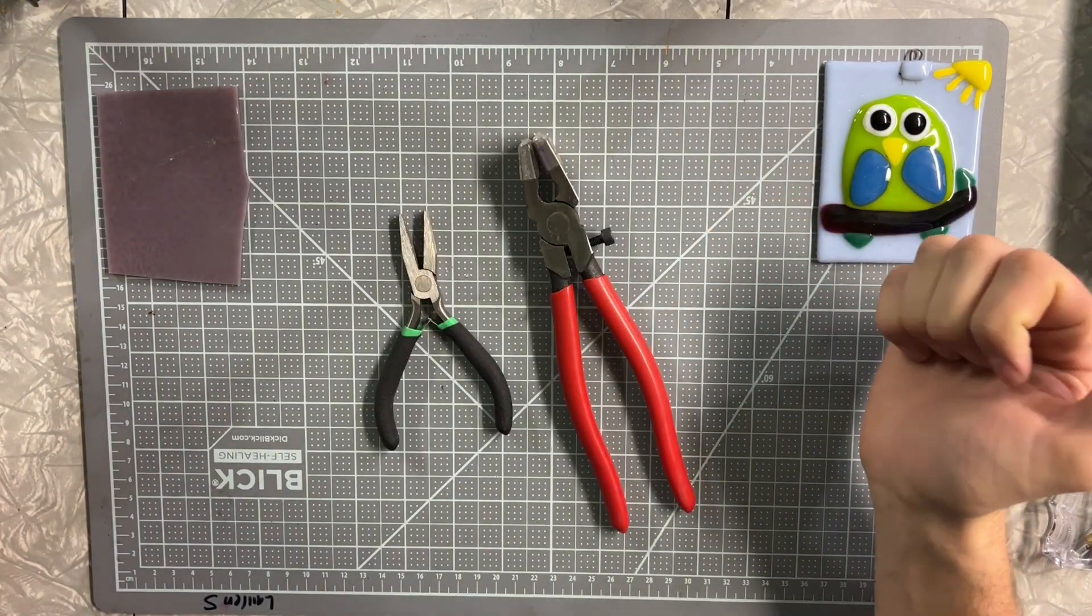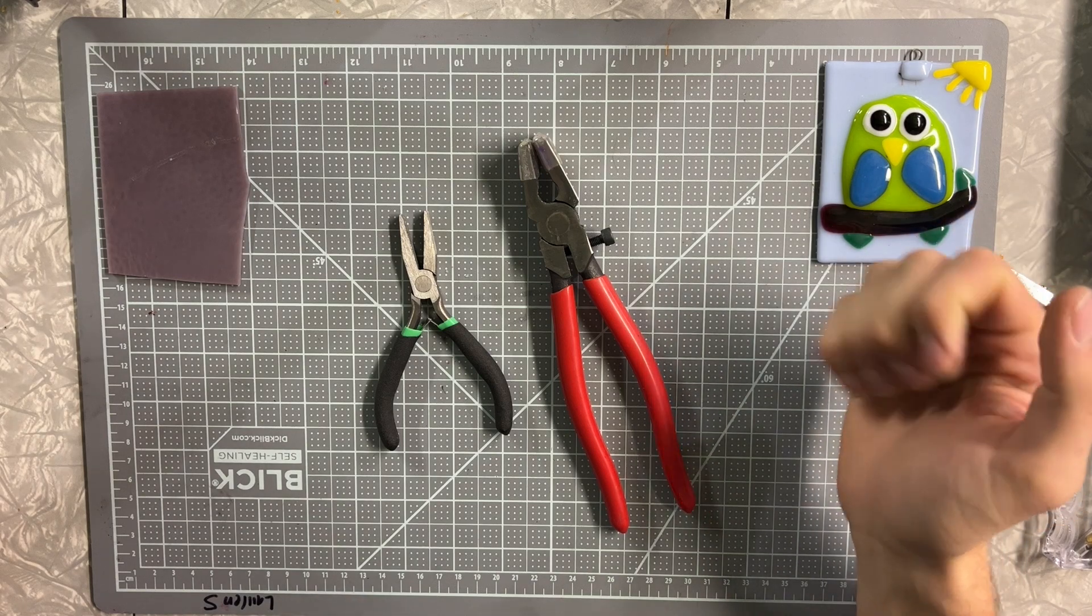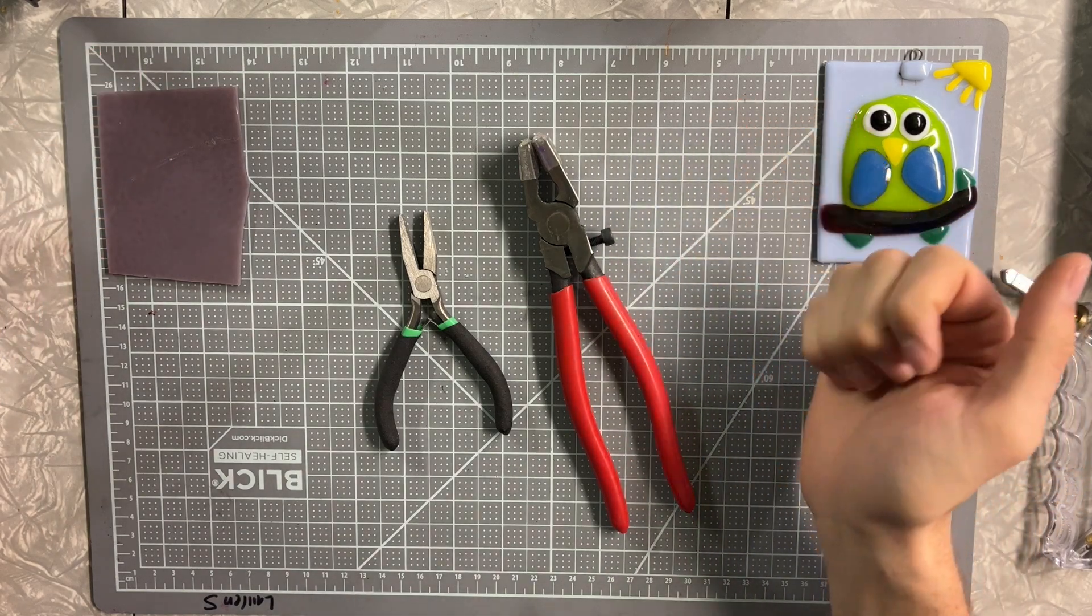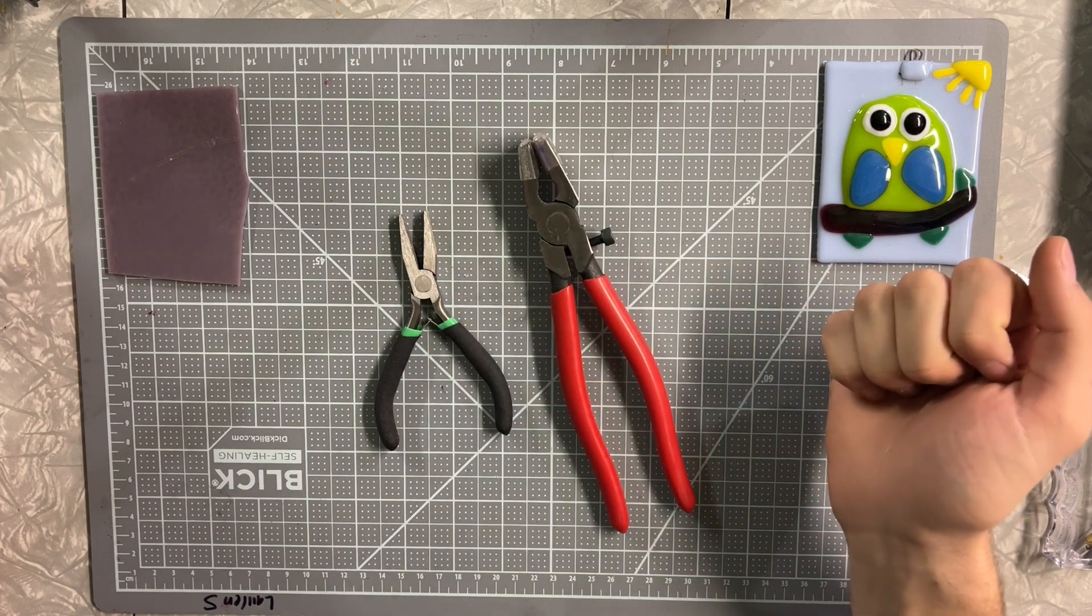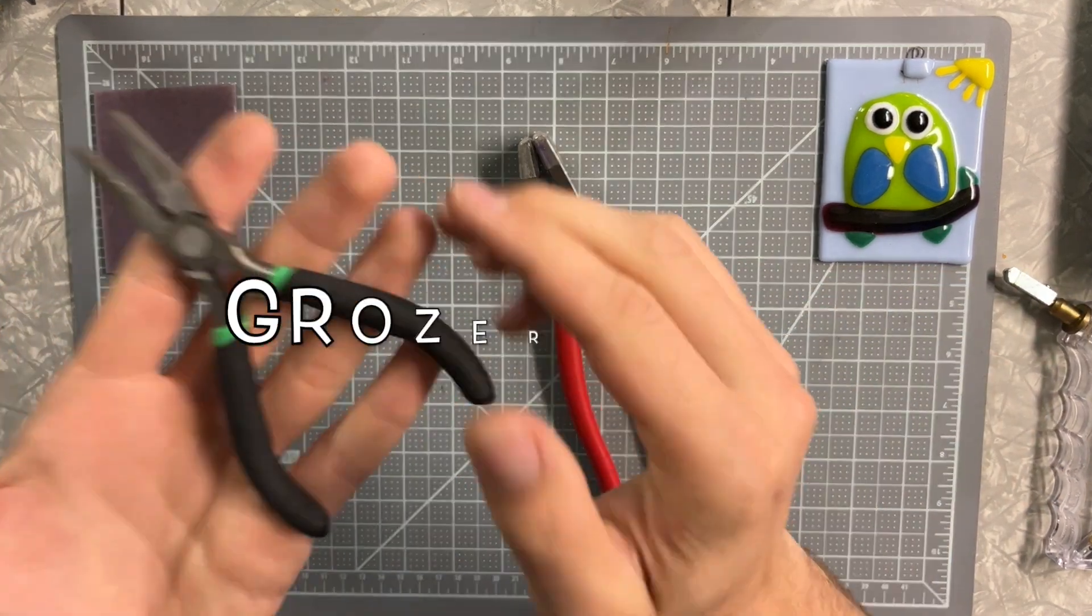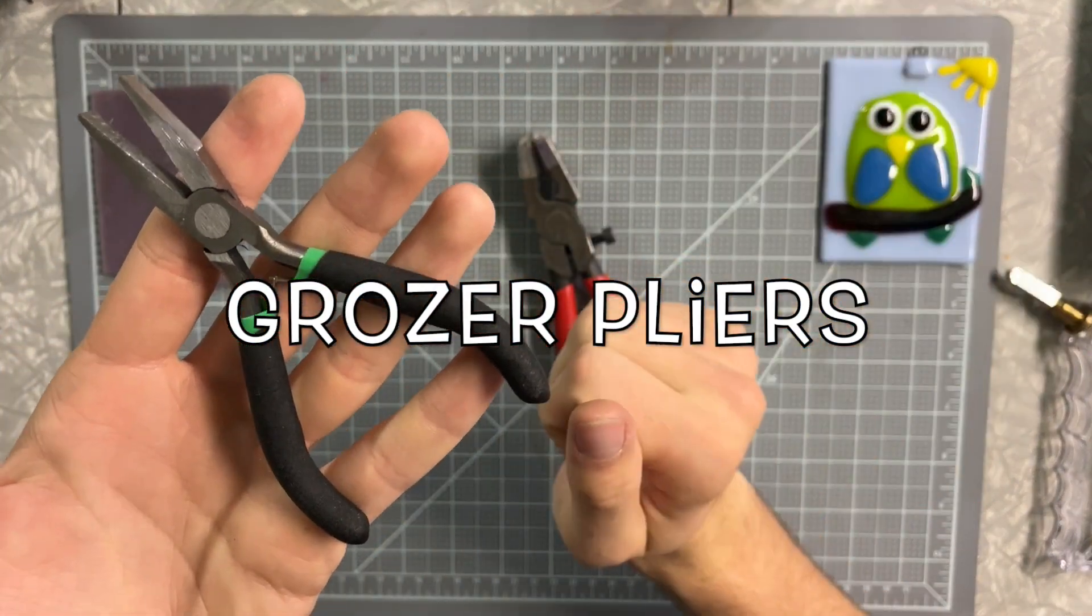I have a couple more tools I'd like to talk about. I have two types of pliers here. One is used for breaking glass and one is used for nibbling glass. These are called grozing pliers, and grozing means just to nibble.